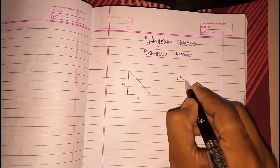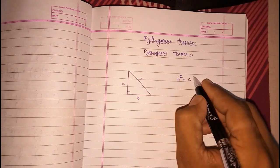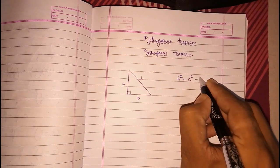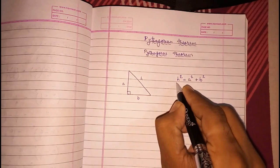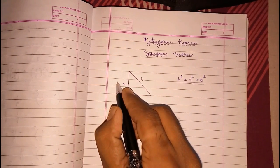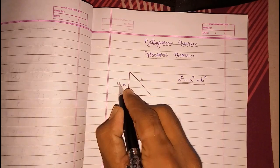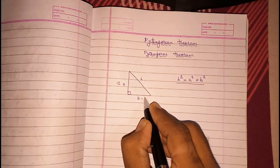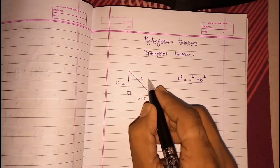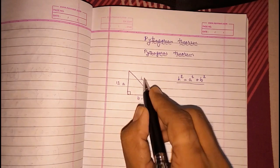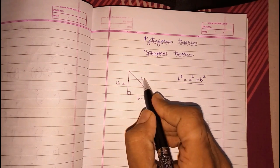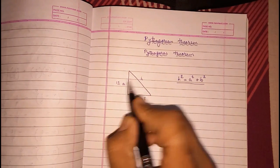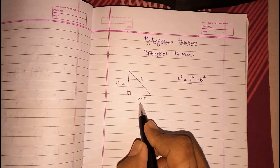Will be equal to the sum of square of other two sides. Suppose they had given this side as 12 and this is 5, so they tell us to find this. We can easily find. Or sometimes they will give these two sides, and then also we can find that.